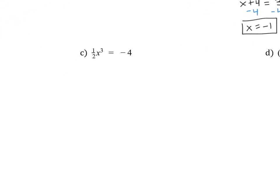All right, let's have a look at part C. So again, our first step needs to be to isolate x cubed. So we can achieve that by multiplying both sides by 2. And here, since we have x cubed, we will take the cube root. Since it's an odd root, no need for the plus or minus. So this leaves us with x equals negative 2. The cube root of negative 8 is negative 2.